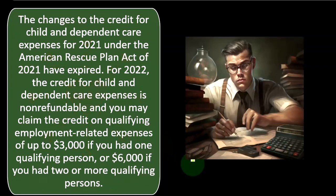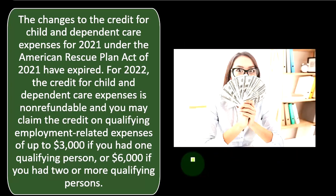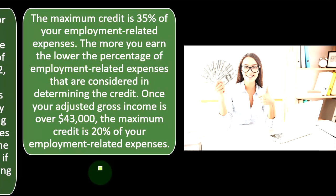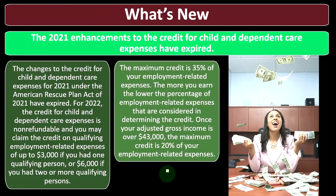The changes to the credit for child and dependent care expenses for 2021 under the American Rescue Plan Act of 2021 have expired. For 2022, the credit is non-refundable — it doesn't go below zero, unlike the child tax credit and earned income tax credit. You may claim the credit on qualifying employment-related expenses up to $3,000 for one qualifying person or $6,000 for two or more. The maximum credit is 35% of employment-related expenses, but the more you earn, the lower the percentage. Once your adjusted gross income exceeds $43,000, the maximum credit is 20% of your employment-related expenses.